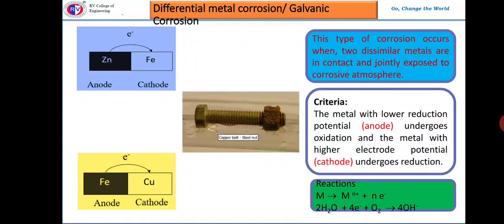These are the common reactions occurring during differential metallic corrosion. This corrosion is also called galvanic corrosion since the situation is similar to galvanic cells. The rate of corrosion mainly depends upon the difference in the electrochemical potential of the two metals — the larger the difference, the more will be the rate of corrosion. When designing a device or structure, you should select metals with less reduction potential difference to reduce the rate of corrosion.